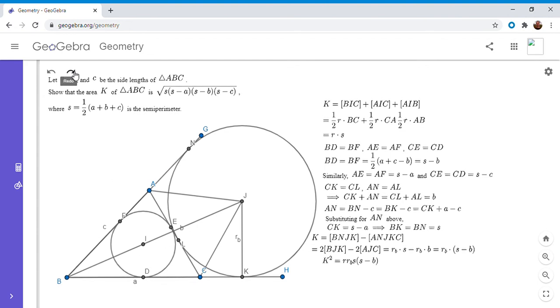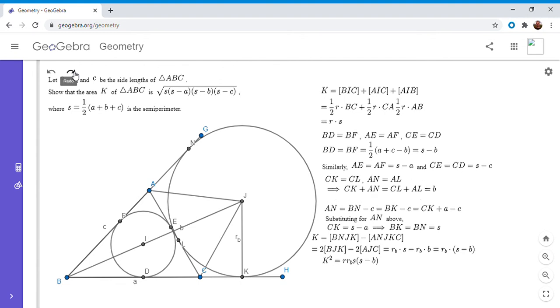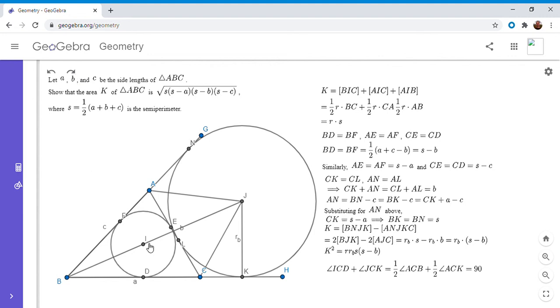So I'm going to write out that... But basically, if you look at angle ICD plus angle JCK, I claim they have to add up to 90 because ICD is half angle ACB and JCK is half angle ACH by the property of the excenter that it has to lie on the angle bisectors. So if you take half of ACB and half of ACK, well, that's just half of 180, so that's 90. So if angles ICD and angle JCK add up to 90, well, since ICD and JCK are both right triangles, they have to be similar right triangles. And from there, we can get ratios involving r and r_B.